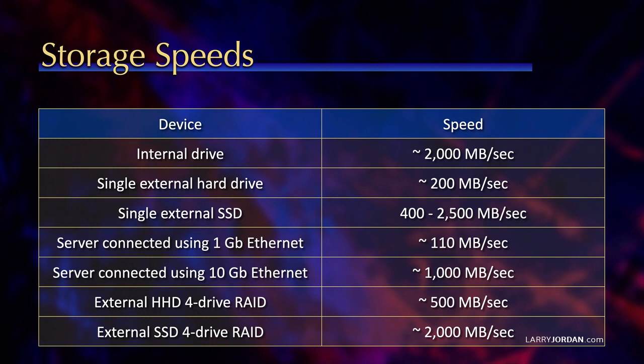Another reason: look at the speed of a single external hard drive with spinning media — it's about 200 megabytes a second. An external SSD, a single one, is anywhere from 400 to 2,500 megabytes a second. Some earlier SSDs like PCIe are around 500 megabytes a second, while newer ones like NVMe are pushing 2,500 to 2,800 megabytes per second — really fast.